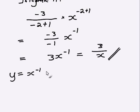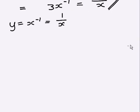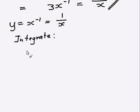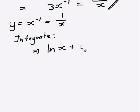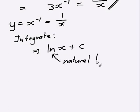What about when you have a function x to the power negative 1, which is 1 on x? Well, this is a special case. You can't use the rule we've just done — you have to use a different rule, and this rule is fairly simple. When you integrate anything to the power negative 1, your integral is the natural log of the variable, plus the constant of integration. Don't forget about that. So ln is the natural log.